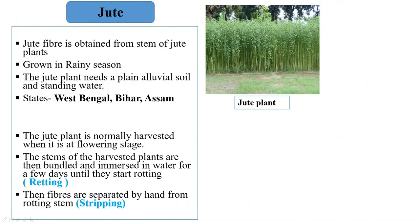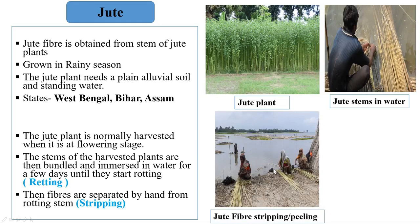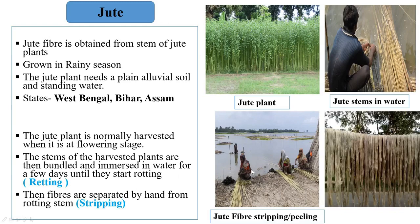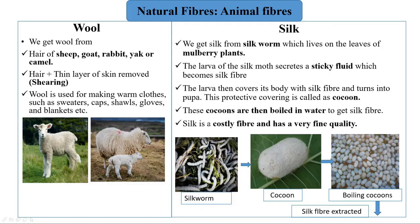Another important plant fiber is jute. Jute fiber is obtained from the stem of jute plants, grown in the rainy season in alluvial soil with standing water. In India, jute is mainly cultivated in West Bengal, Bihar, and Assam. The harvested stems are bundled and submerged in water for a few days until they start rotting — this is called retting. The fibers are then separated by hand from the rotting stem in a process called stripping.